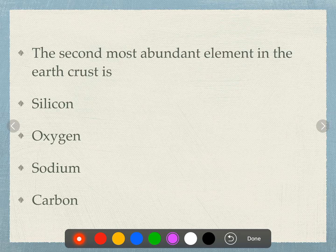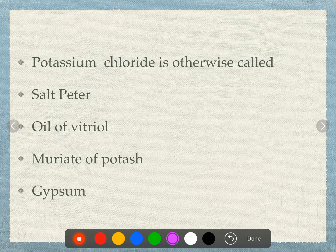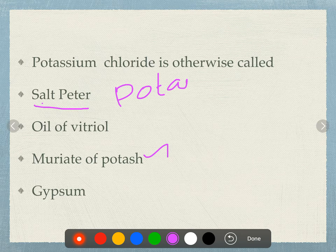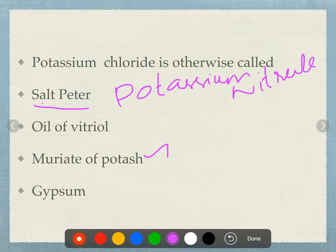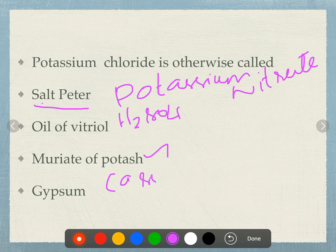Potassium chloride is otherwise called muriate of potash. Saltpeter is potassium nitrate; Indian saltpeter is also a nitrate compound. Oil of vitriol is H₂SO₄. Gypsum is CaSO₄·2H₂O.